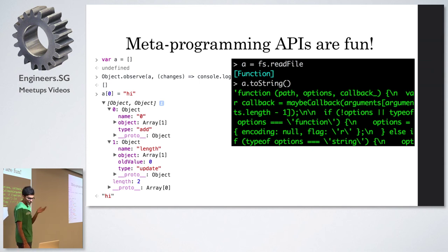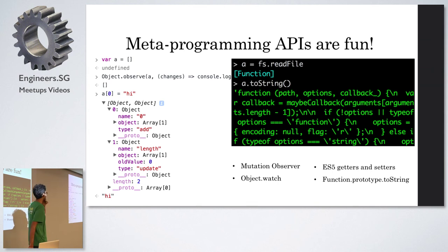Even like simple things like function dot prototype dot to string, you can see that, like this is a node. If you, fs dot read file is supposed to be a native function, but if you do a to string of it, you can actually see the internal source code of, not the entire implementation, of course, just the JavaScript part of it. So you can do a lot of cool stuff. There are other APIs like this, which you can use to inspect your own program, monitor it, intercept it, and do stuff like that.